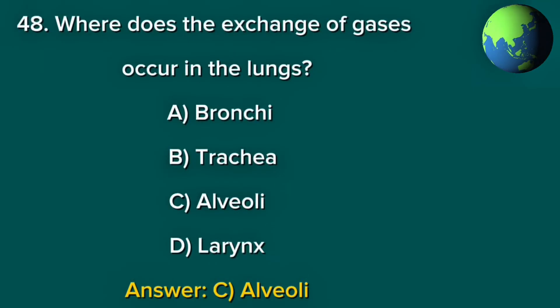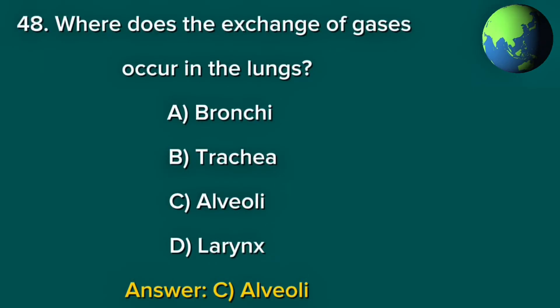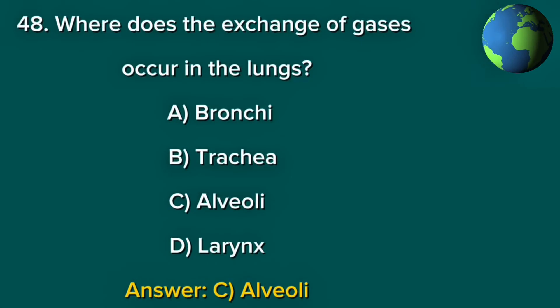Question 48. Where does the exchange of gases occur in the lungs? A. Bronchi. B. Trachea. C. Alveoli. D. Larynx. Answer: C. Alveoli.